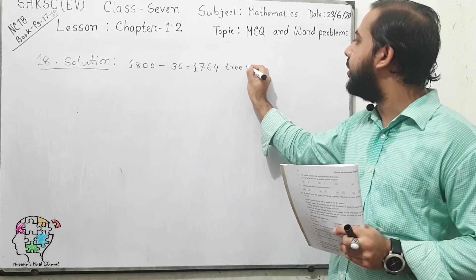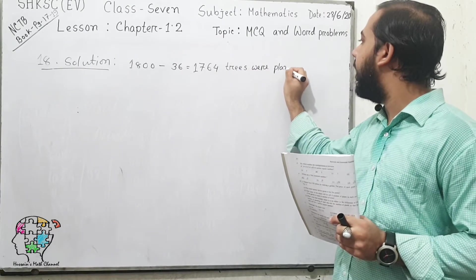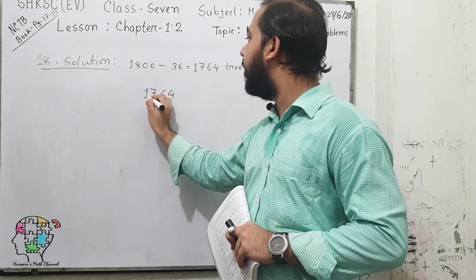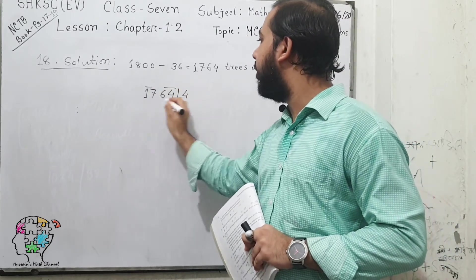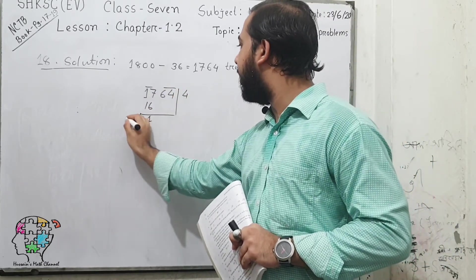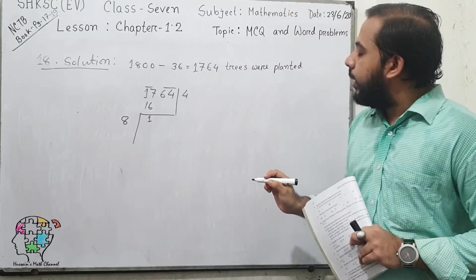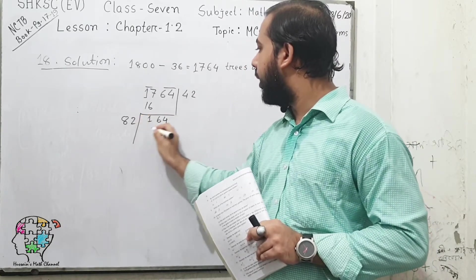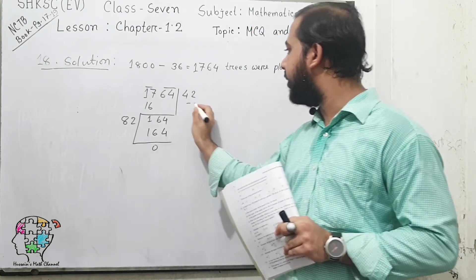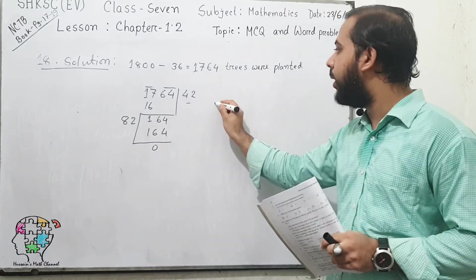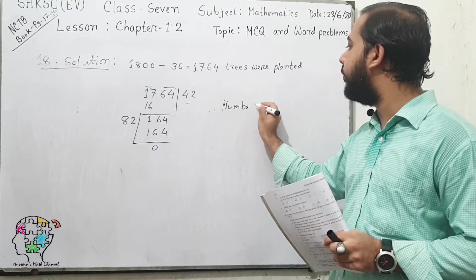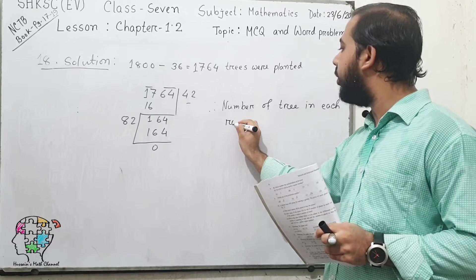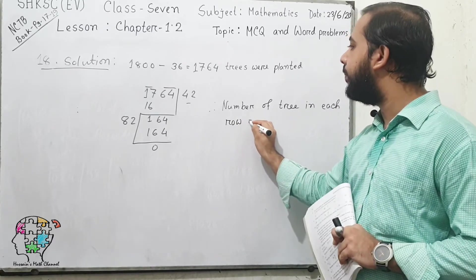Now we need to find the square root of 1,764. Doing the calculation: 4 times 4 is 16, doubling gives 8, putting down 64, and adding 2 gives 164. So our required answer is 42. Therefore, the number of trees in each row is 42.